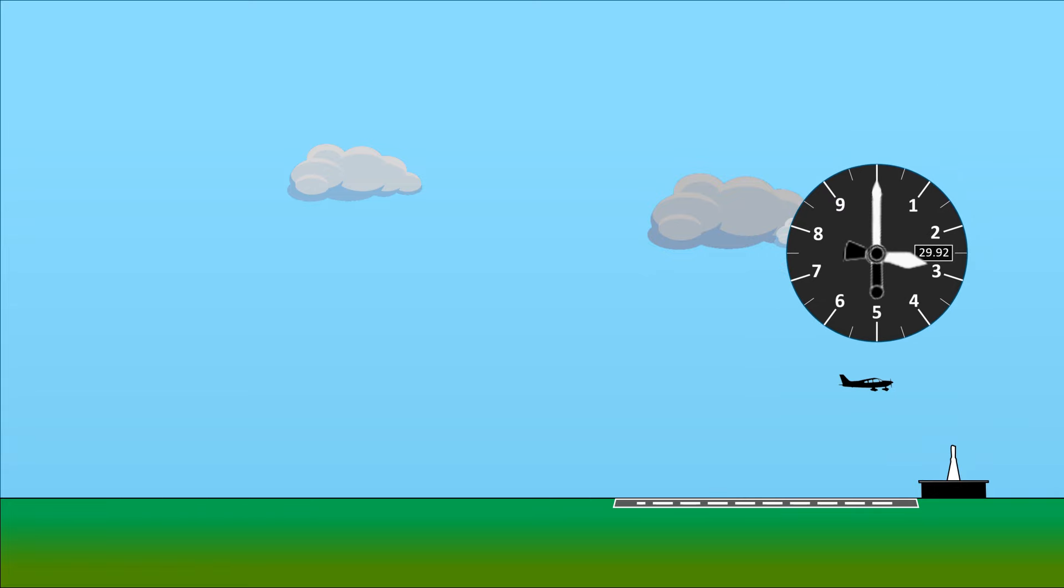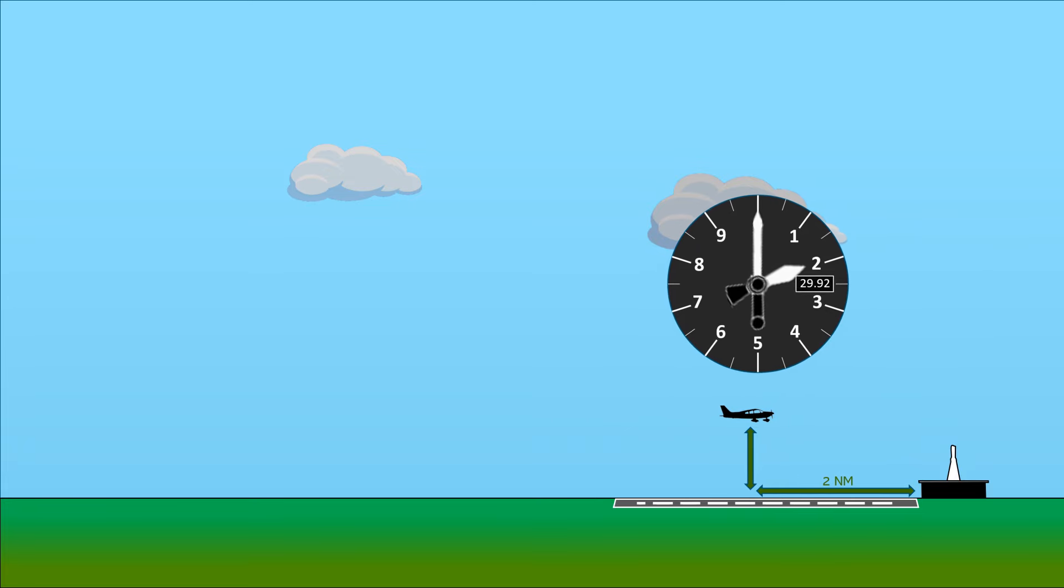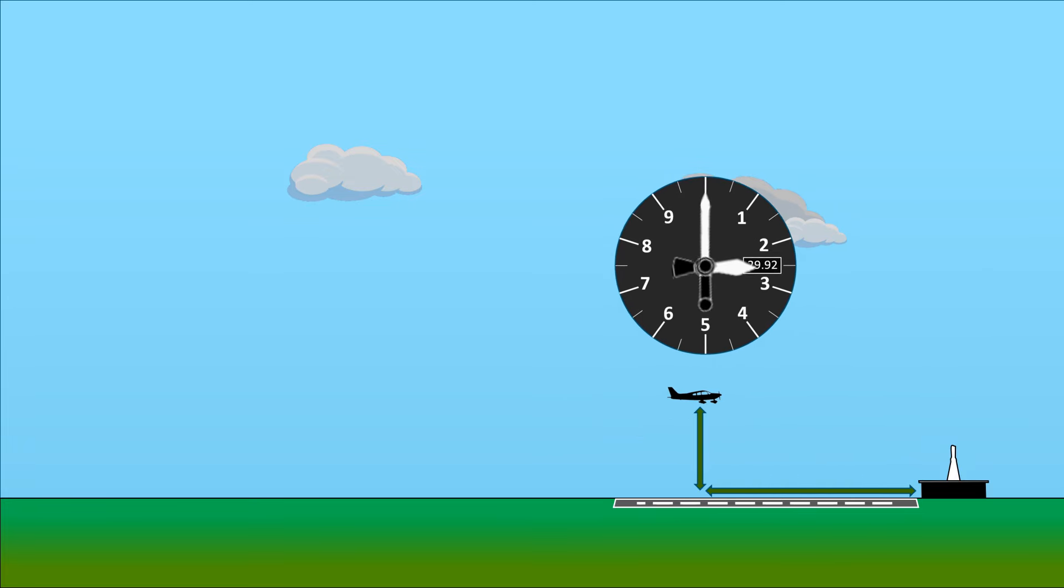The rule of thumb with DME is that for every 1,000 feet above the ground the aircraft is, slant range error like this can be ignored only if we're flying 1 mile or more away from the station. So at 1,000 feet and 1 mile distance, we get a small error. The same thing for 2,000 feet up and 2 miles away. And so on.